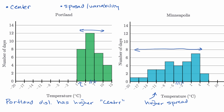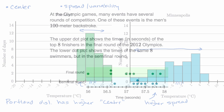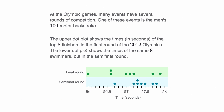Let's do another example using a different representation. At the Olympic Games, many events have several rounds of competition. One event is the men's 100 meter backstroke. The upper dot plot shows the times in seconds of the top eight finishers in the final round of the 2012 Olympics — that's the green one. The lower dot plot shows the times of the same eight swimmers in the semi-final round.